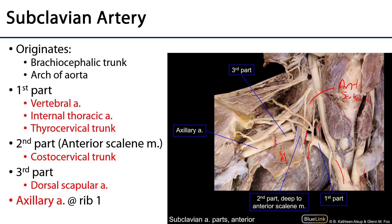And then finally we have the thyrocervical trunk arising from the first part, which has four major branches. There is the inferior thyroid artery. The inferior thyroid artery supplies the thyroid gland as well as the parathyroid glands with blood, and also the larynx with blood.